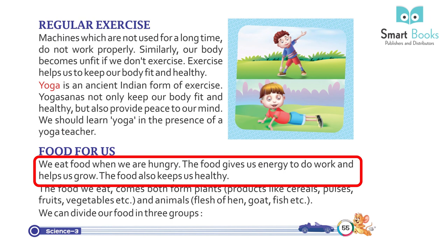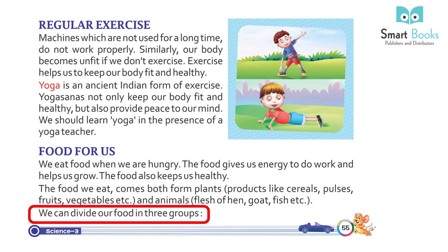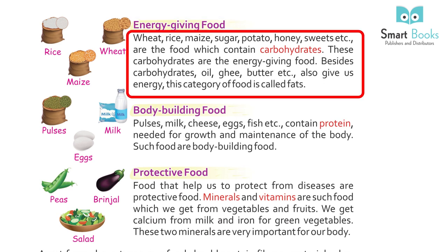Food: we eat food when we are hungry. Food gives us energy to do work and helps us grow. Food also keeps us healthy. The food we eat comes from both plant products – like cereals, pulses, fruits, vegetables – and animals – like meat, eggs, and fish. We can divide our food into three groups. Energy-giving food: rice, maize, sugar, potato, honey, and sweets contain carbohydrates, which are energy-giving foods. Oils, ghee, and butter also give energy and are called fats.